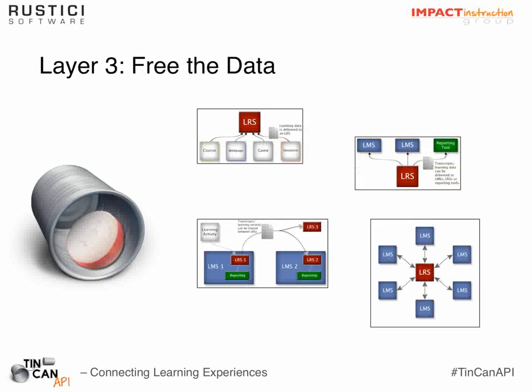The next layer I call 'free the data.' In our research, one of the biggest complaints we heard was: SCORM allows me to collect a bunch of data, but then it just goes into my LMS and dies some violent death in a black hole. People want access to their data, the ability to analyze it in different ways, make it portable, transfer it across systems. Tin Can is inherently open — data that goes in can also come out. Data can be transported across systems and moved between learning record stores. This is one of the more transformational parts of what's happening.